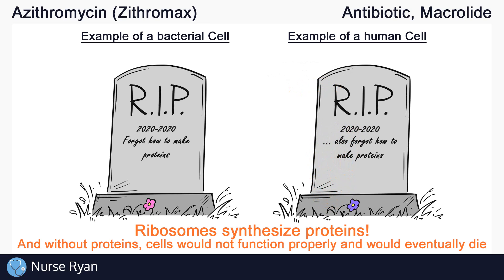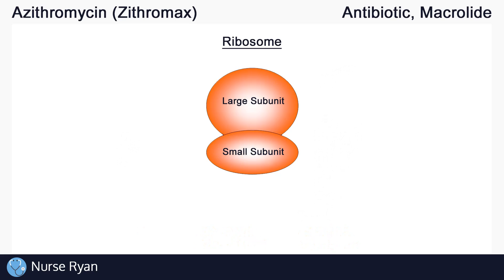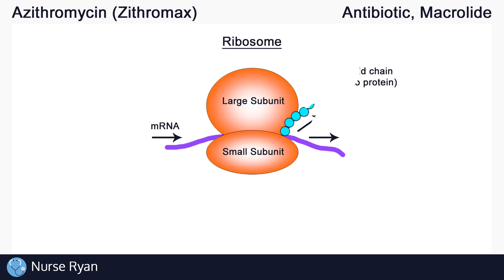All ribosomes are made up of subunits — you can imagine we've just zoomed in on a ribosome here. Each ribosome has a large subunit and a small subunit that are both required to synthesize proteins. These subunits work together to first read information that comes in on messenger RNA, or mRNA, then use that information to create amino acid chains, which eventually form into proteins.